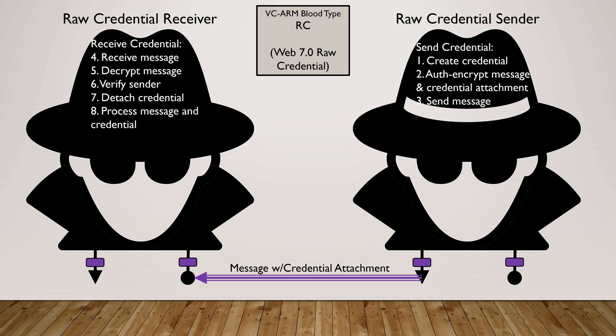The raw credential sender-receiver model is fairly straightforward. On the right, the raw credential sender creates the credential, auth-encrypts the message and the credential attachment, and sends it from the origin interface to the service endpoint of the raw credential receiver on the left. The receiver then receives the message, decrypts it, verifies the sender, detaches the credential, and processes both the message contents and credential using some workflow or business logic. This is labeled with the VC ARM blood type RC — standing for a Web 7.0 raw credential.